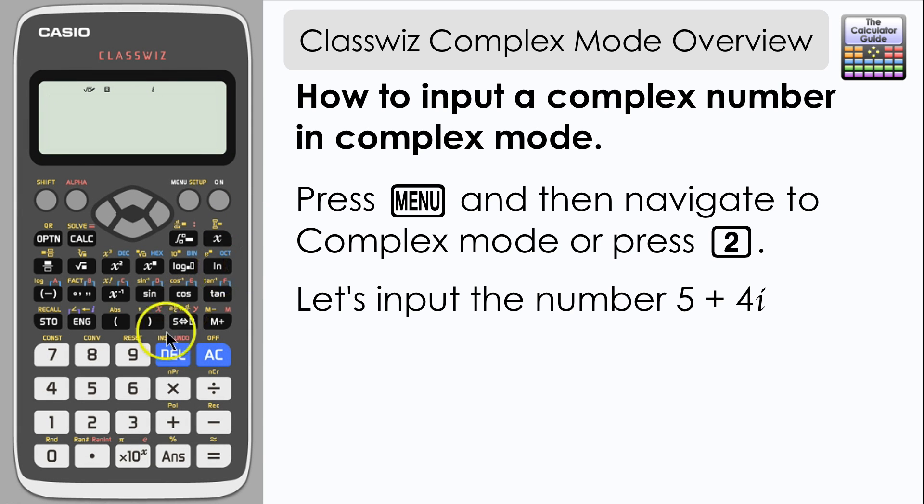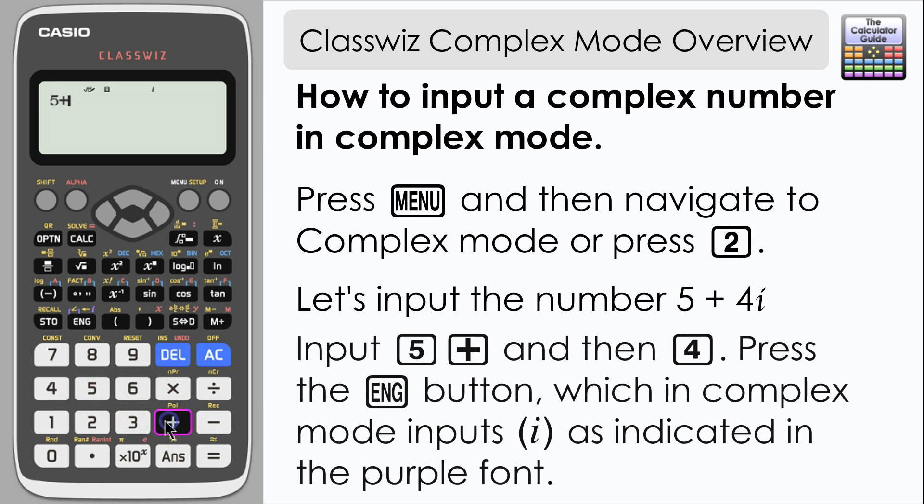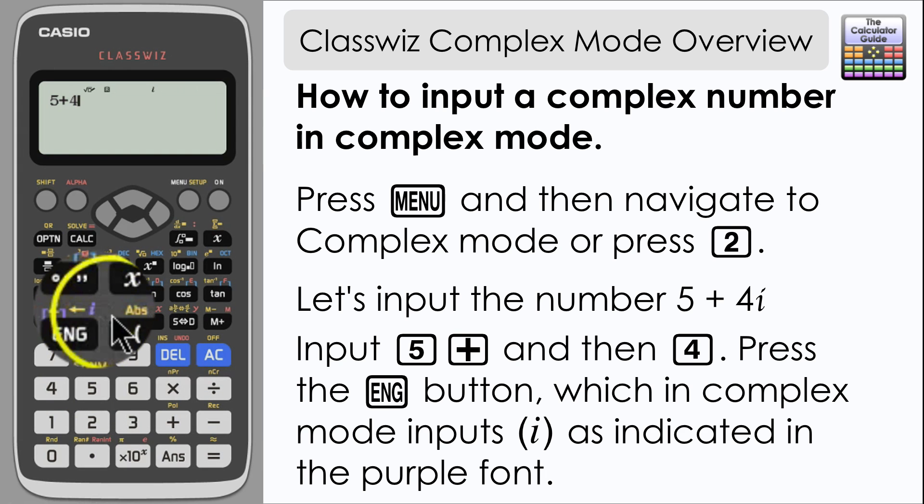Let's try inputting a complex number 5 plus 4i. Input 5 plus and then 4, and then if you notice the engineering button just above it there is a purple i, so if you press the engineering button in complex mode that inputs your i for you.